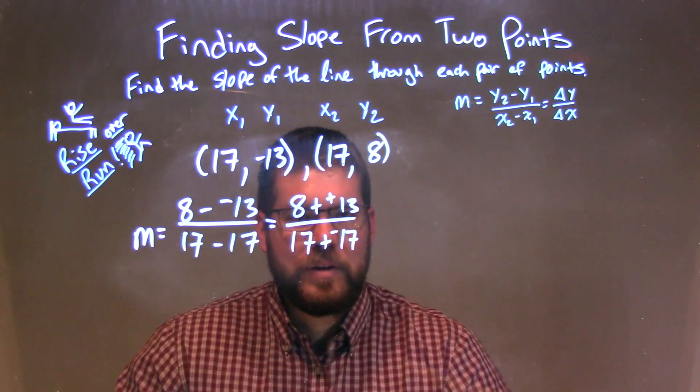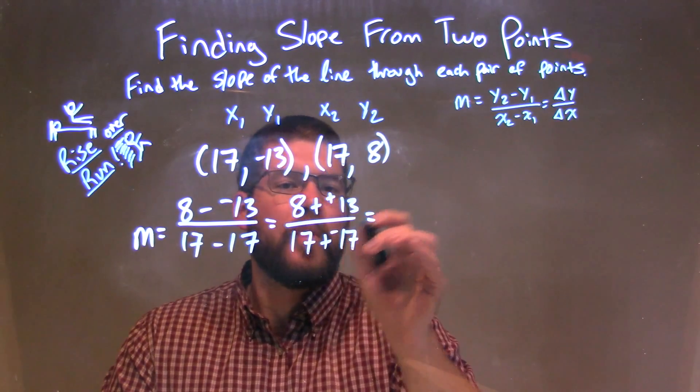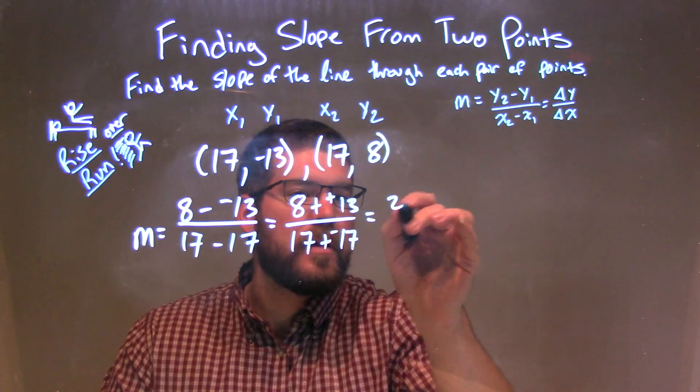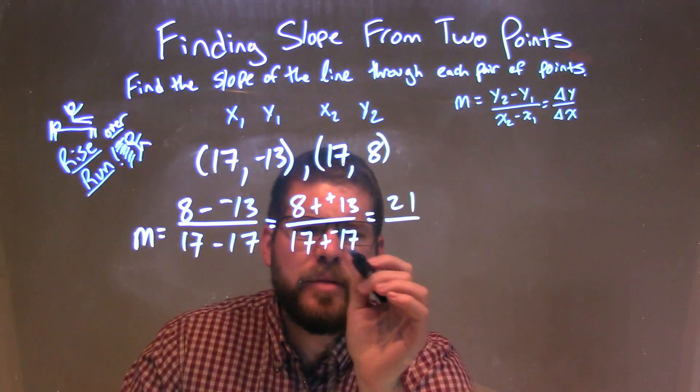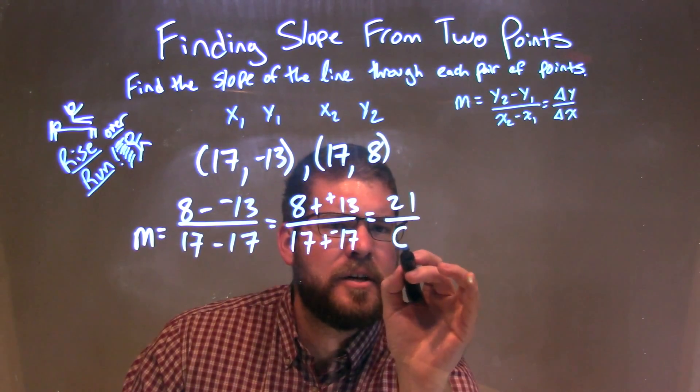8 plus a positive 13, that's 21, over 17 plus a negative 17, which is 0.